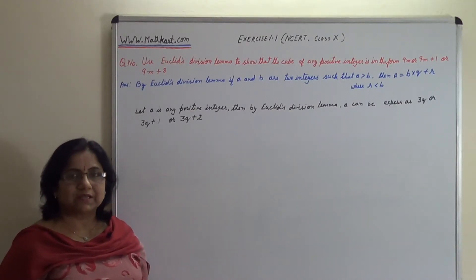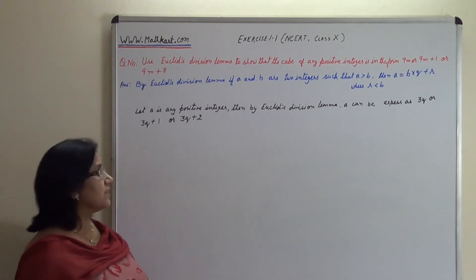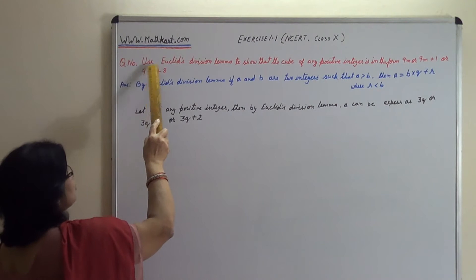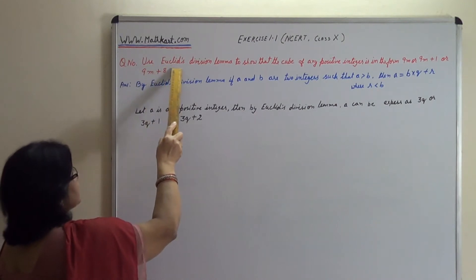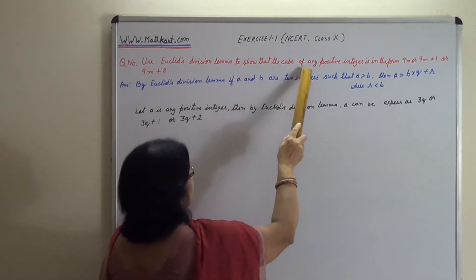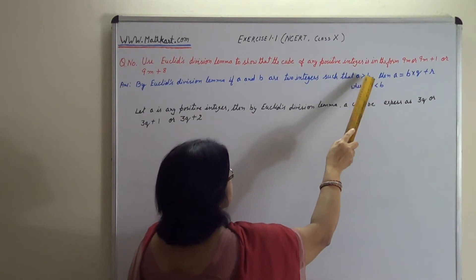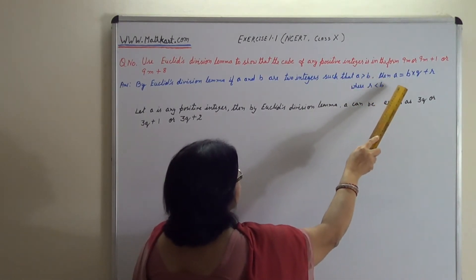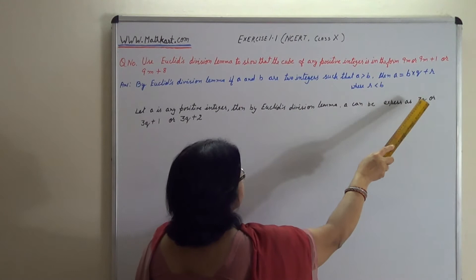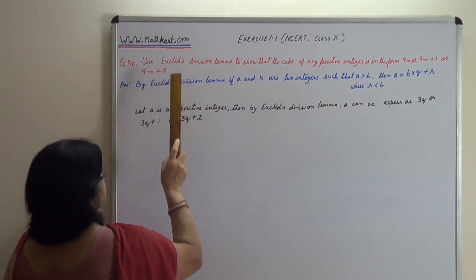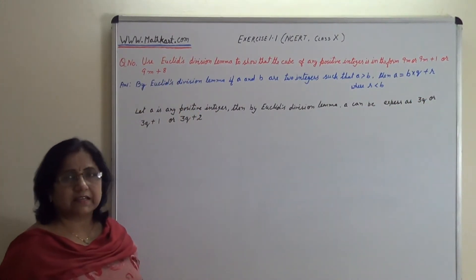Hello students, I am Manju Chandra and I am going to ask you a question. The question is: use Euclid's division lemma to show that the cube of any positive integer is of the form 9m, or 9m plus 1, or 9m plus 8. Now I will answer this.